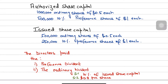In this video we learn how to calculate dividends — both the preference dividend and the ordinary dividend. In the previous video I showed the treatment of ordinary dividend, both when it is interim and when it is final, and how to treat the proposed dividend. Now let's see how we calculate dividends.